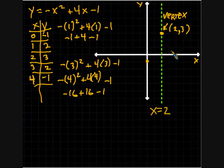So x is 0, y is negative 1. We did that. X is 1, y is 2. So we get that. At x is 2, y is 3. We already graphed that point. That's our vertex. At x is 3, y is 2. And at x is 4, y is negative 1.